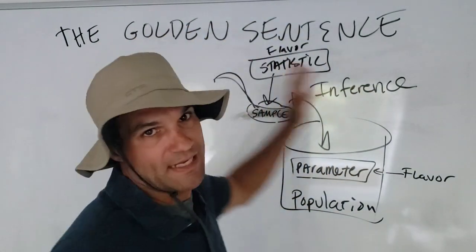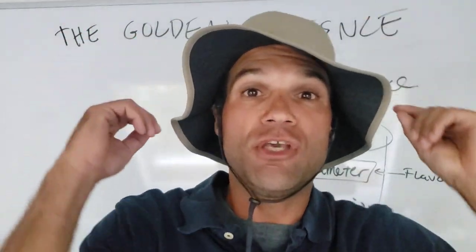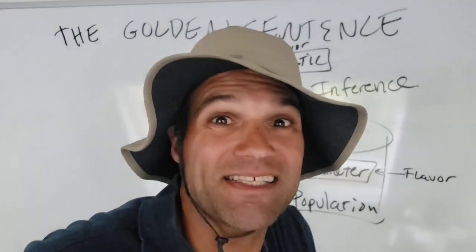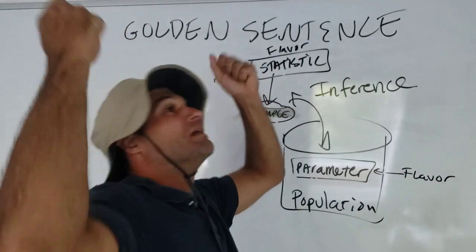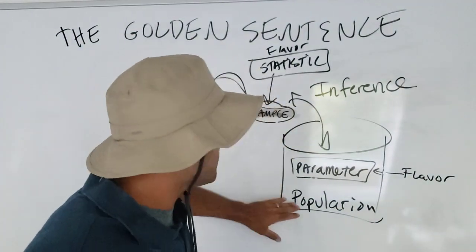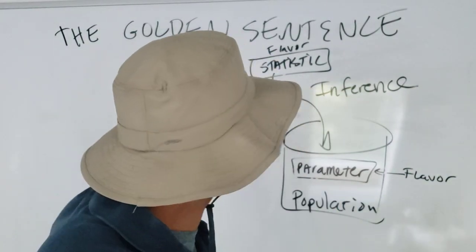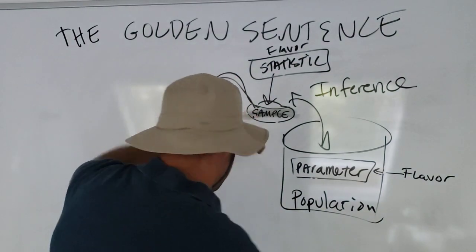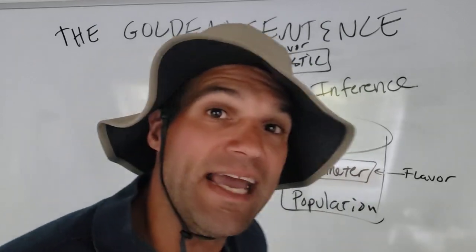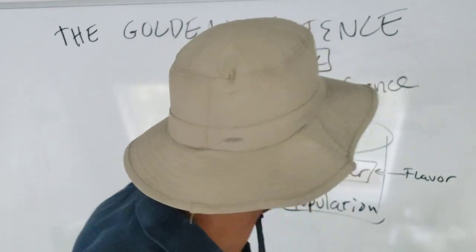So, the golden sentence I want you to remember is the following: I was curious about a population parameter, but a census wasn't worth doing — it was too costly or just unreasonable. So instead, I took a sample and I used the data to calculate a statistic, to make an inference about the population parameter.